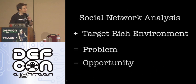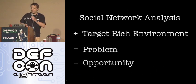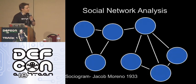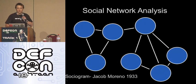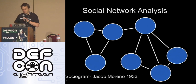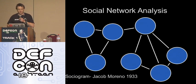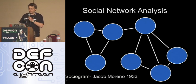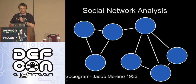Social network analysis — target-rich environment — equals a problem or an opportunity, depending on how you're viewing it. This dude here, Jacob Moreno, is credited with being the grandfather of social network analysis, and that sort of graph first appeared in the New York Times in 1933, around the gestalt psychology movement. You can date this stuff back to the Greeks, but they didn't have the same sort of computing power that we've got, so they were largely limited.